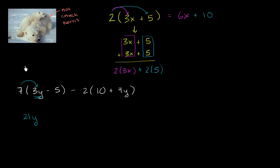Either way you want to think about it. And then I have 7 times, and we're going to be careful with the sign. This is 7 times negative 5. 7 times negative 5 is negative 35. So we've simplified this part of it.